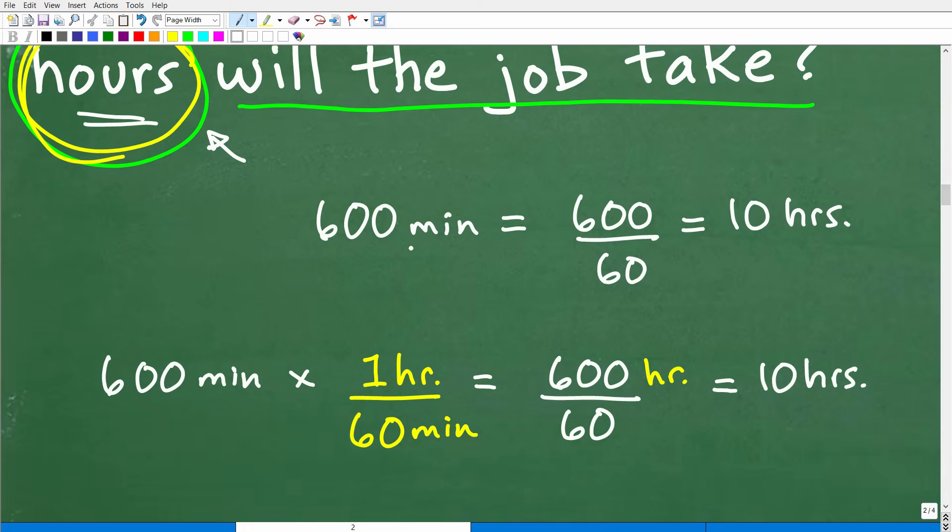Let's convert minutes to hours. So 600 minutes, how many hours? Well, there's 60 minutes in one hour. So somebody could just say that's 600 divided by 60, right? And that's exactly correct. That would be 10 hours.